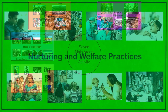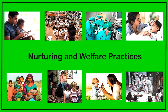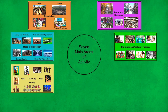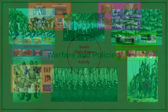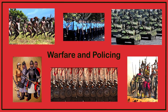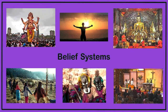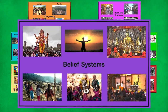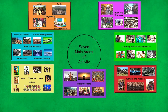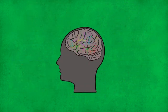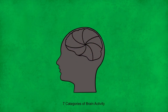Next we see the ever-present nurturing and welfare activities of human cultures, which includes all the various types of caregiving and teaching practices. We also see warfare and policing activities manifesting across all human populations throughout history. And finally, we have the cultural activities associated with metaphysics, which takes the form of many different types of belief systems. How then have these seven main types of cultural activities actually arisen? The suggestion here is that it's a consequence of the evolved characteristics of the human brain, which can be categorised into seven major types of brain activity.